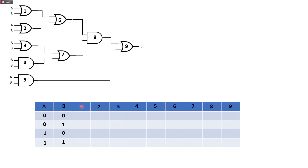Let's determine the output of logic gate number 1 — it is an OR gate. So: 0 or 0 is 0, 0 or 1 is 1, 1 or 0 is 1, 1 or 1 is 1. For an OR gate, as long as at least one input is 1, the output is 1. Gates 2 and 3 are also OR gates, so they give the same results: 0, 1, 1, 1.